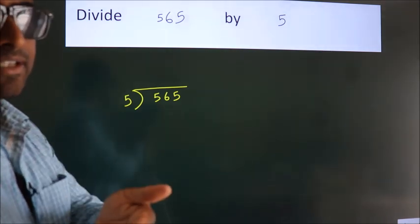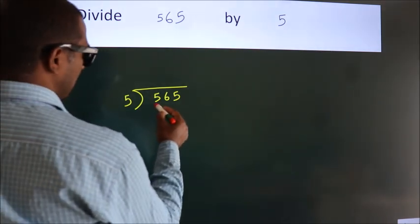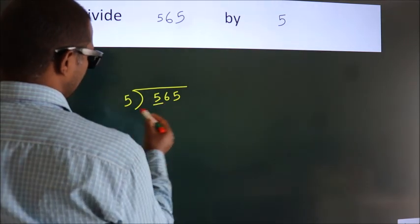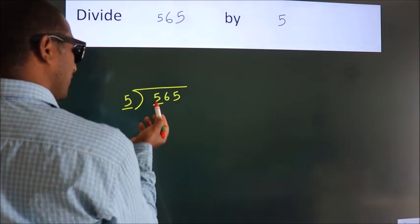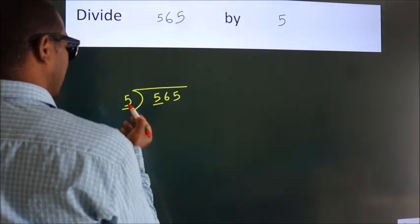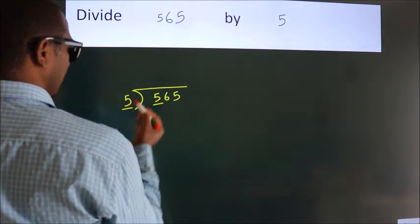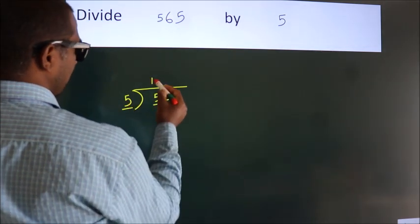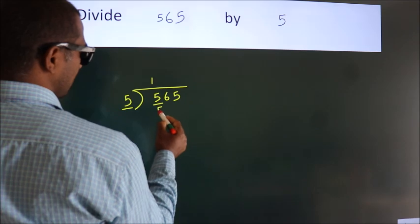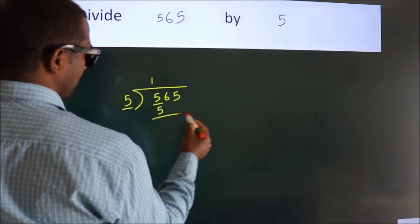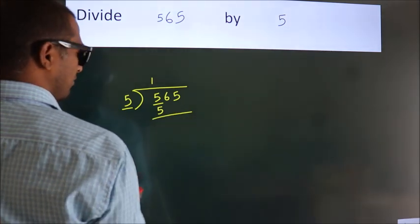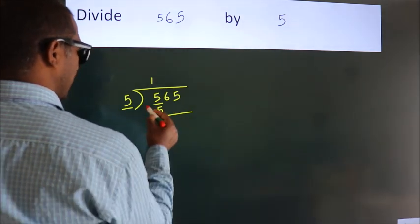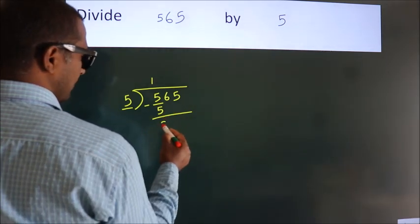Next, here we have 5, and here 5. When do we get 5? In the 5 times table: 5 once is 5. Now we should subtract. We get 0.